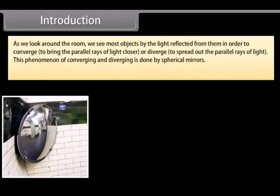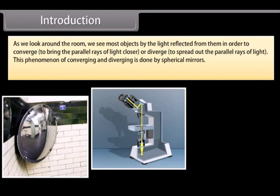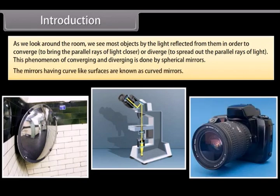As we look around the room, we see most objects by the light reflected from them. In order to converge — to bring the parallel rays of light closer — or diverge — to spread out the parallel rays of light. This phenomenon of converging and diverging is done by spherical mirrors. The mirrors having curve-like surfaces are known as curved mirrors.